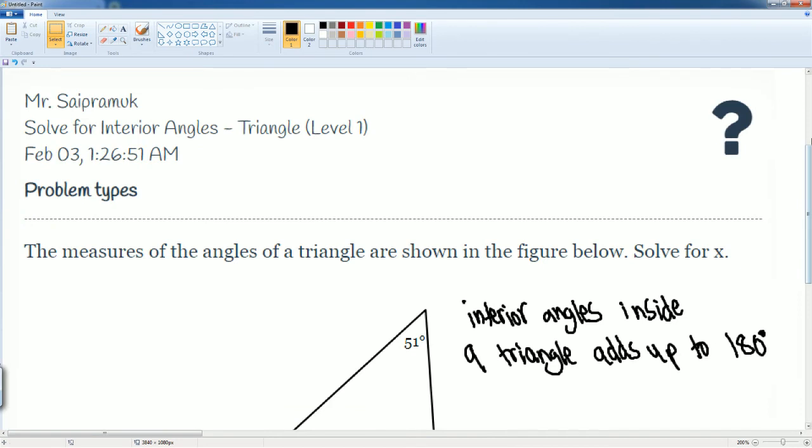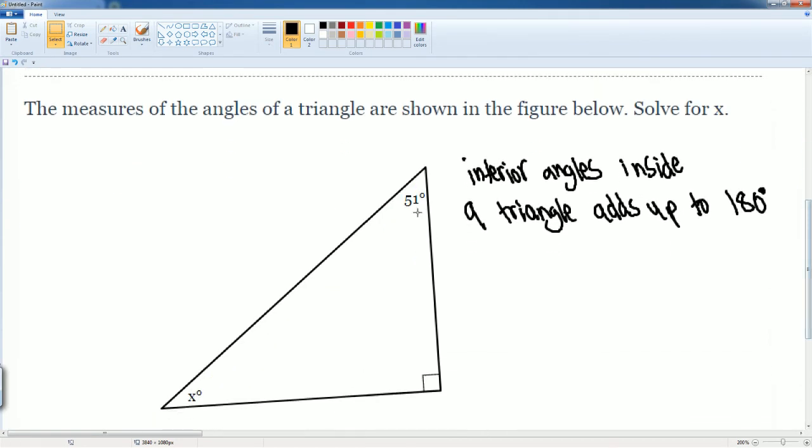We have the angle 51 degrees, then we have this box in a corner - please understand that represents a 90-degree angle. Then we have X on the corner there.